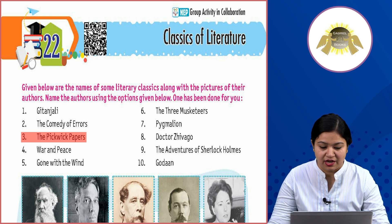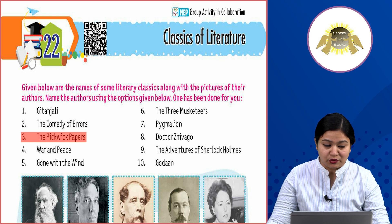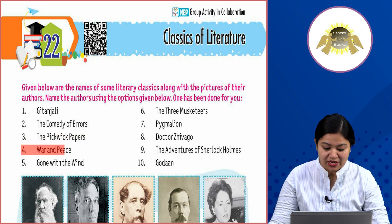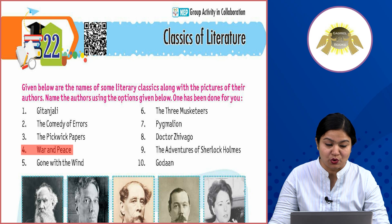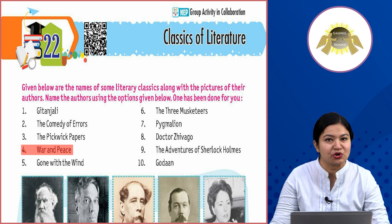Fourth: War and Peace. War and Peace was written by Leo Tolstoy. Leo Tolstoy — the author's picture given at first number is Leo Tolstoy's. So you will write in the fourth entry 'A' for Leo Tolstoy.